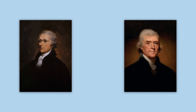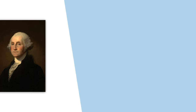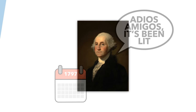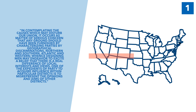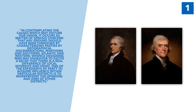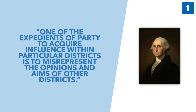The Federalists advocated for strong national government, while the Democratic Republicans wanted the states to have authority, and thus supported a weak national government. In his farewell address to the nation in 1797, George Washington described the dangers of political parties, saying: 'In contemplating the causes which may disturb our union, it occurs as matter of serious concern, that any ground should be furnished for characterizing parties by geographical discriminations — northern and southern, Atlantic and western — whence designing men may endeavour to excite a belief that there is a real difference of local interests and views.'